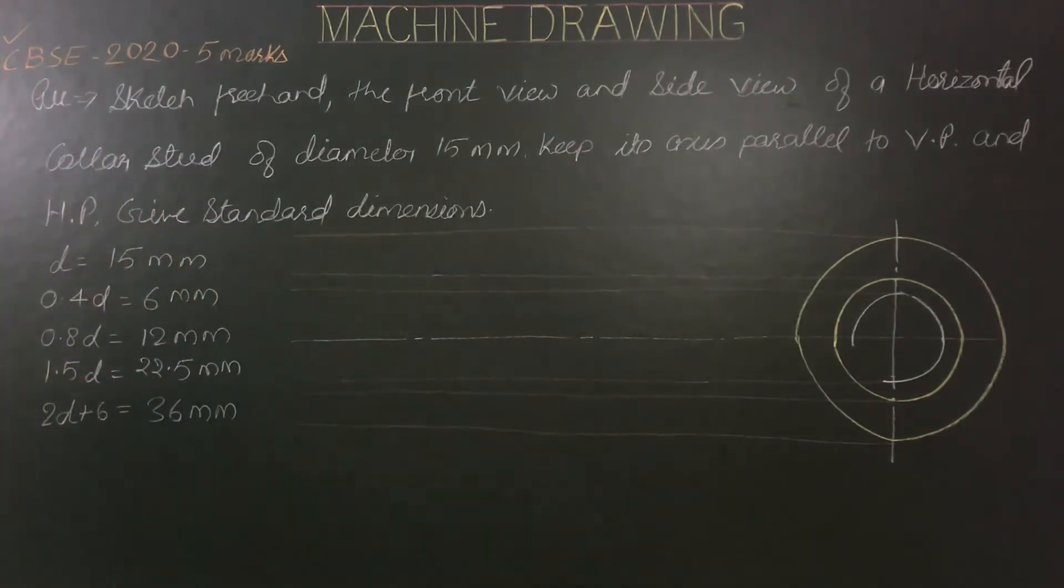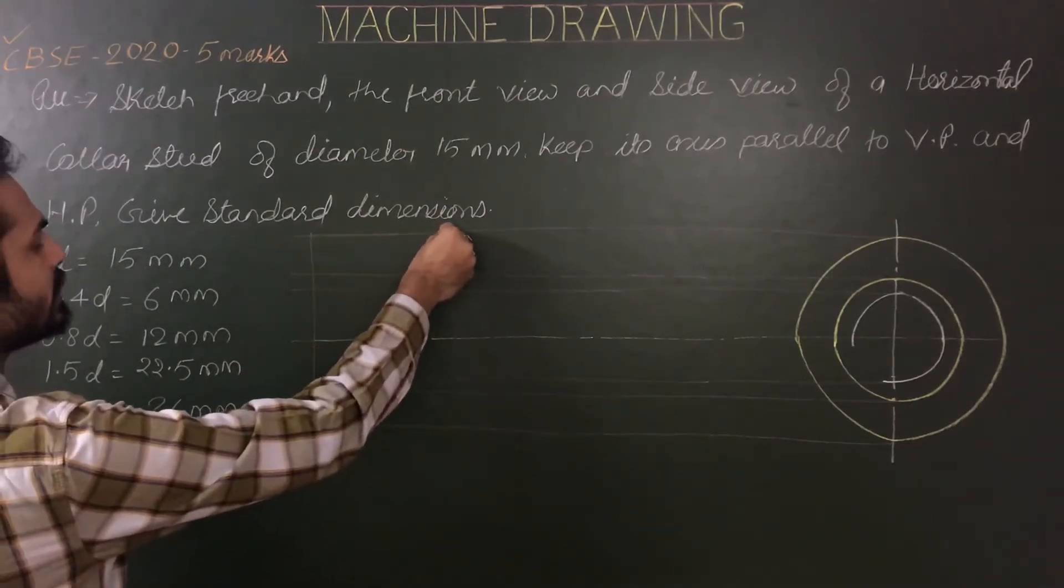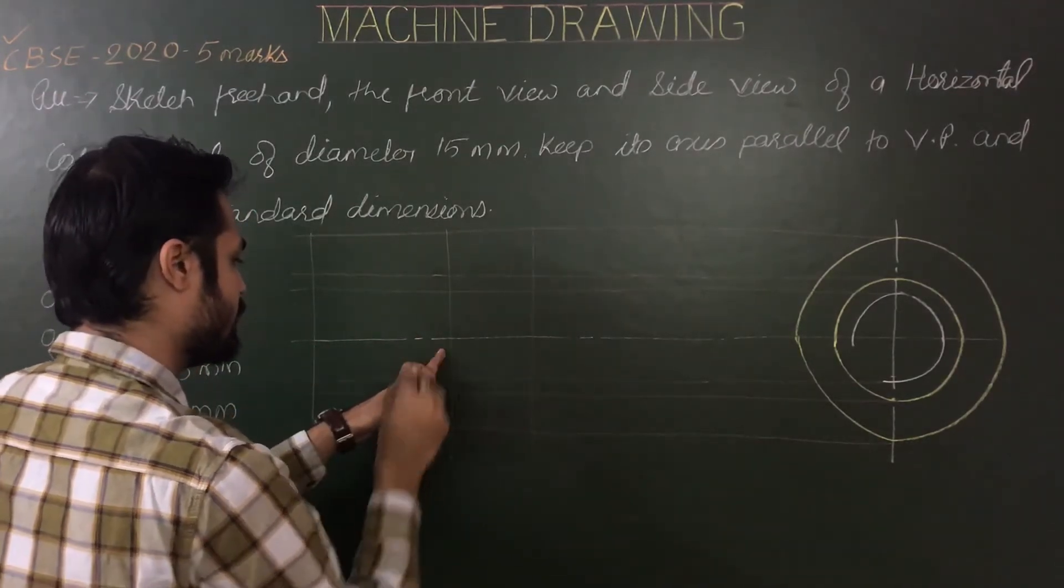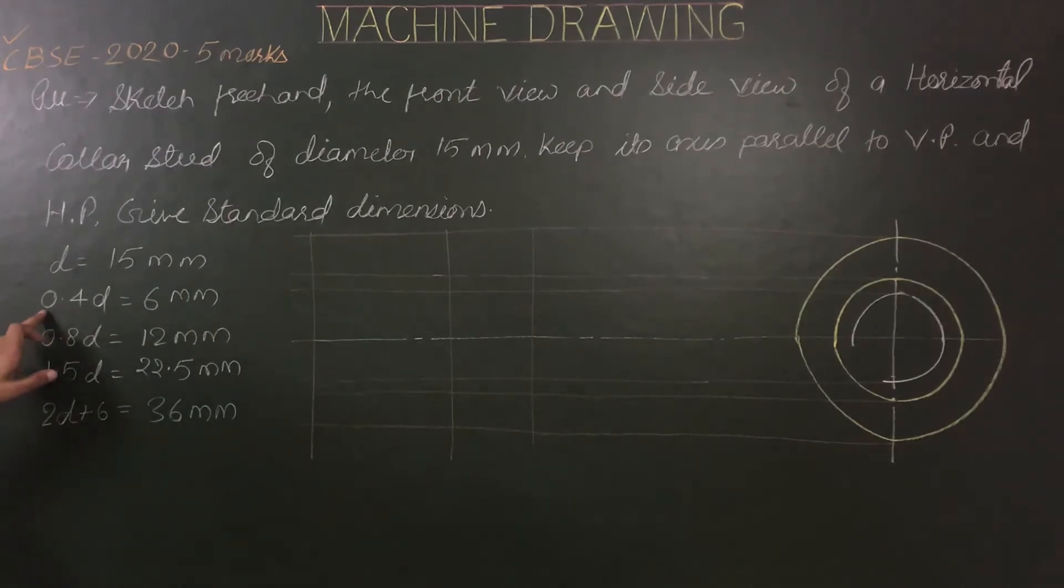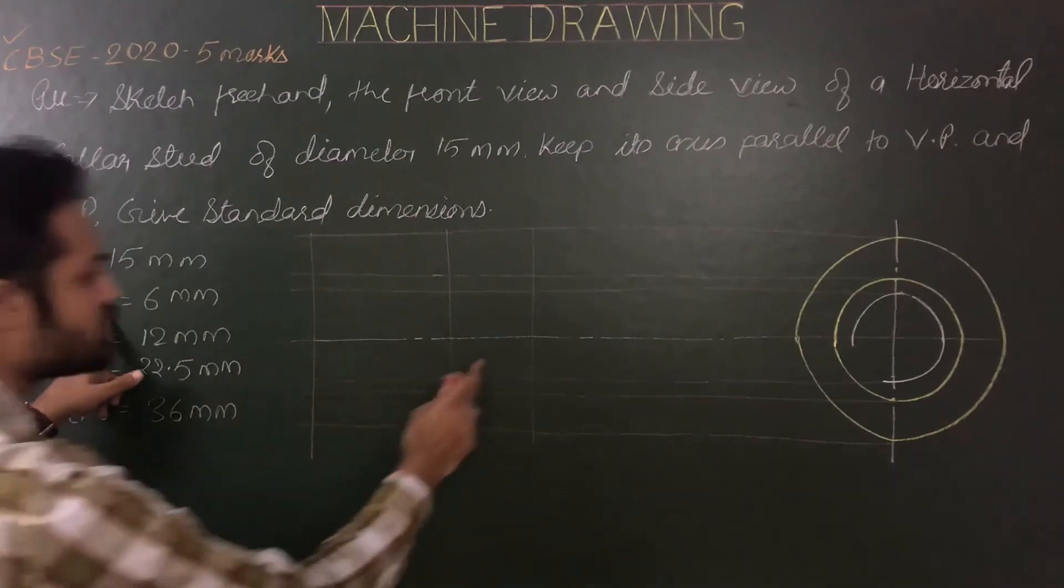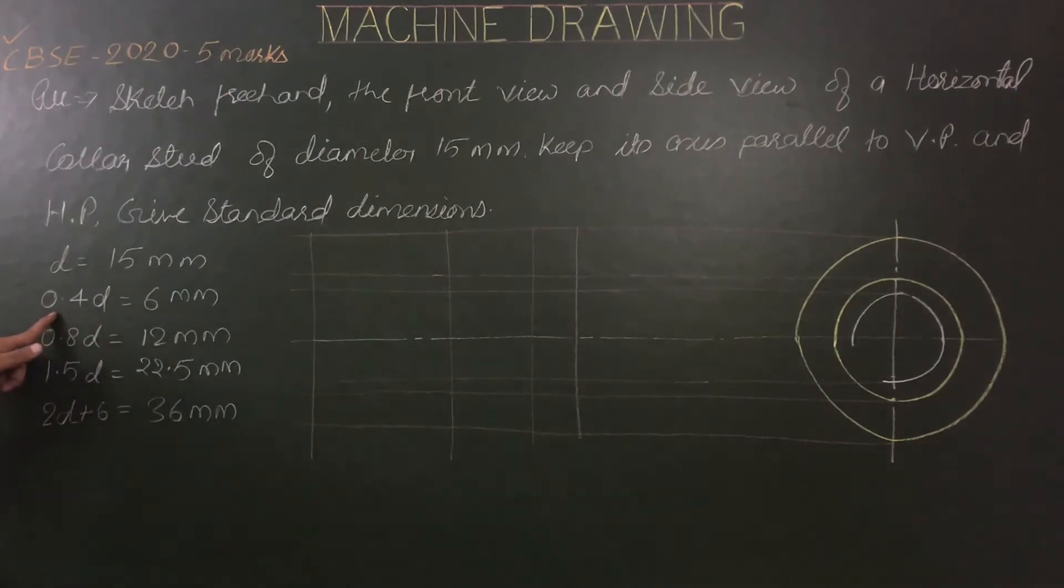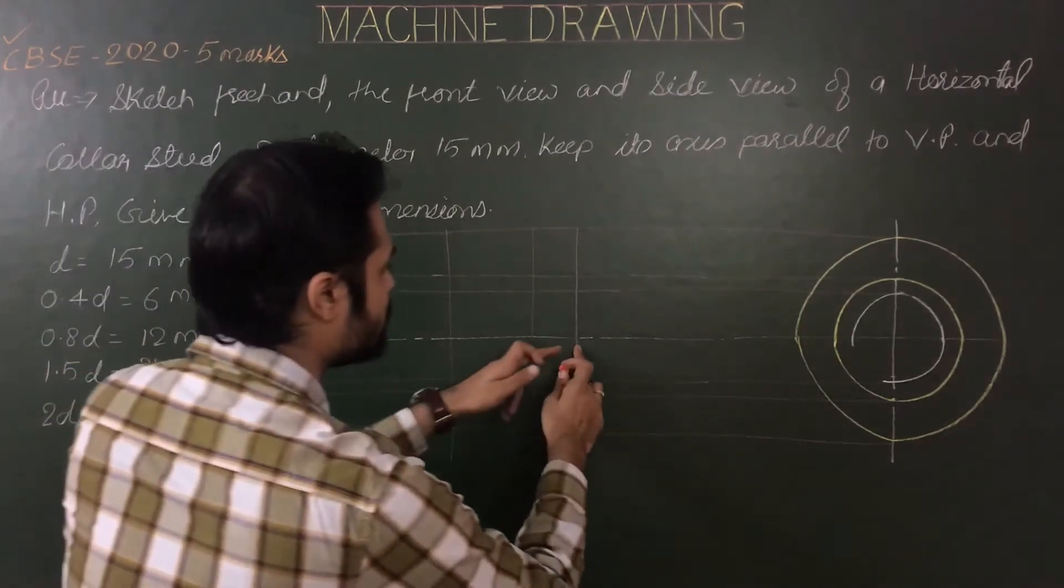Now we know that length of threads or threaded length for nut end is 2d plus 6, then we have central part of any length. For metal end in case of collar studs, length of the metal end equals d. We have to mark these limits: first limit for nut end, this length is 2d plus 6, then any suitable length, then we have collar thickness 0.4 of d, then last metal end d.